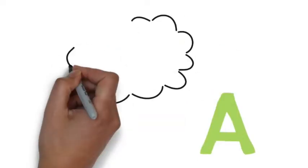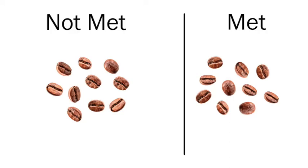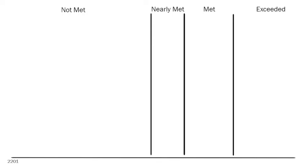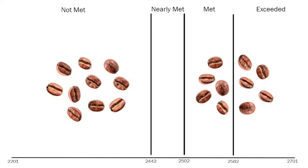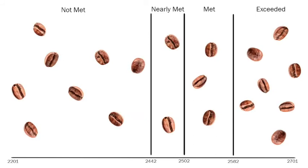Teacher A speaks up. "Hang on a minute. Let's take a look at my student scores a little bit closer. I've used these coffee beans to represent my students. Here's the threshold between meeting standard and not meeting standard — but that's not the whole story. There's not met, nearly met, met, and exceeded, with other thresholds in between. Student scores range from 2201 all the way to 2701. While 50% of my students met standard, you'll see that I had students at all levels this year. Their math scores ranged across the spectrum, from the bottom all the way to the top."